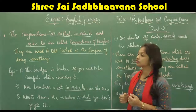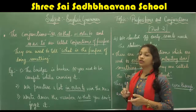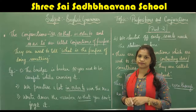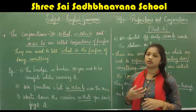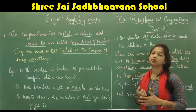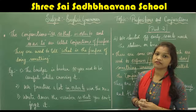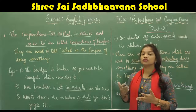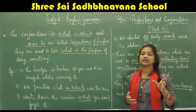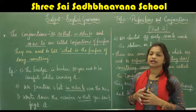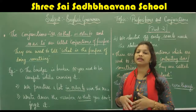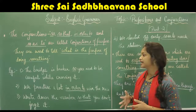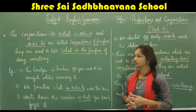The conjunctions 'so', 'so that', 'so as to', and 'in order to' are called conjunctions of purpose, because they are used to tell what is the purpose of doing something.